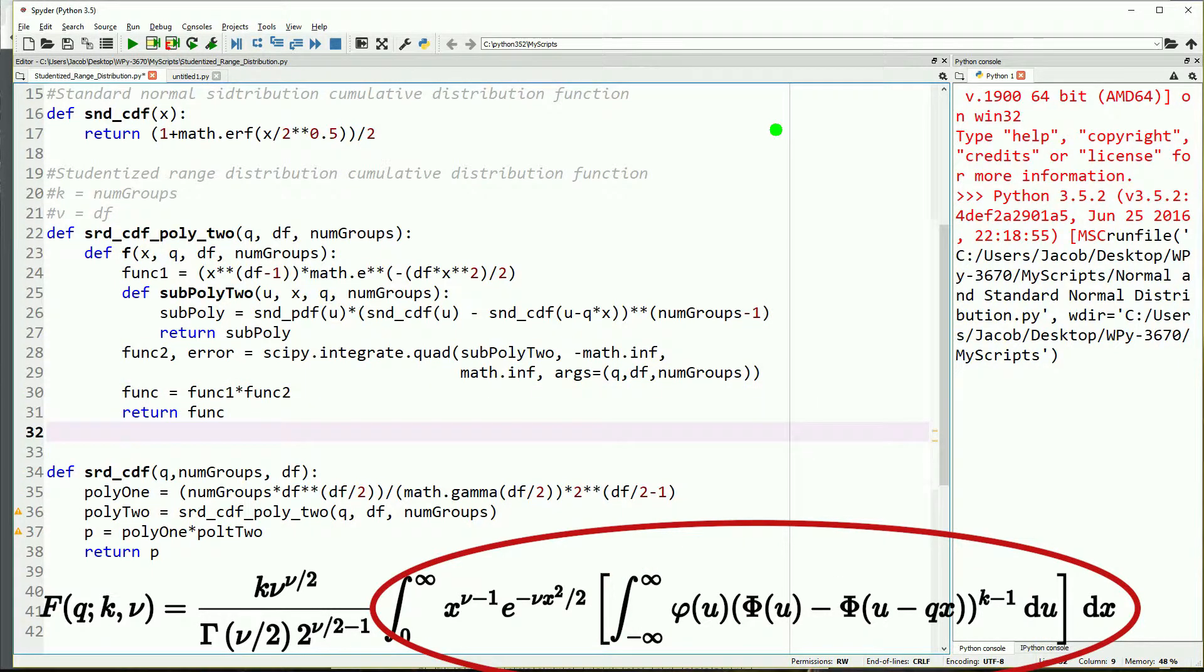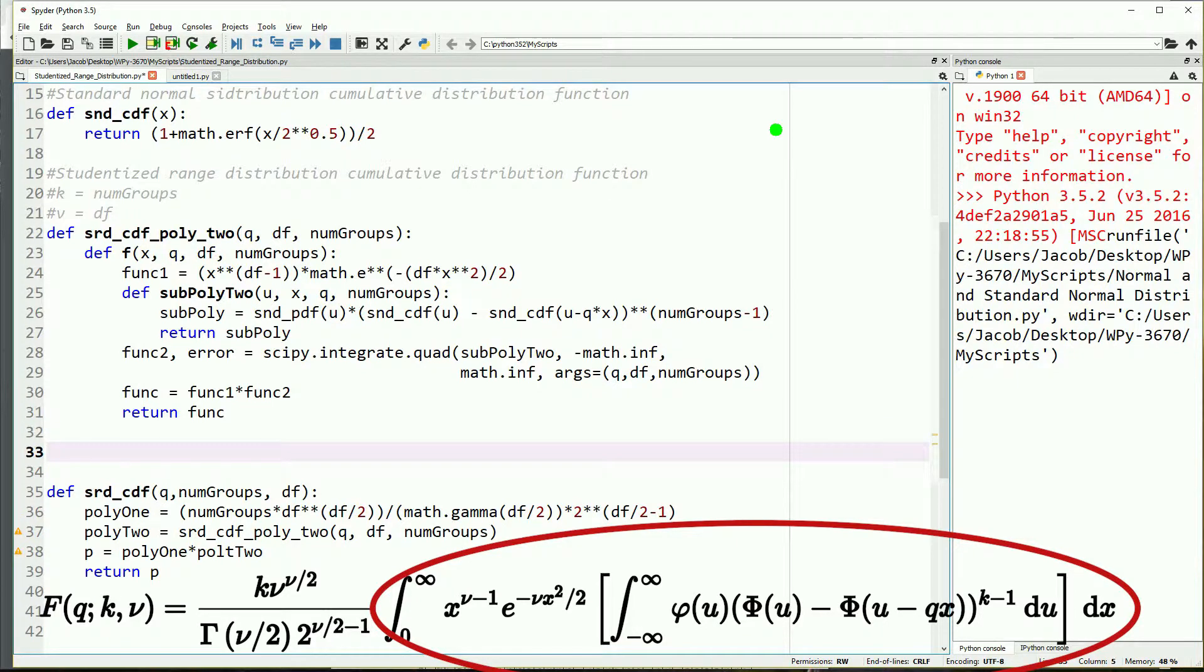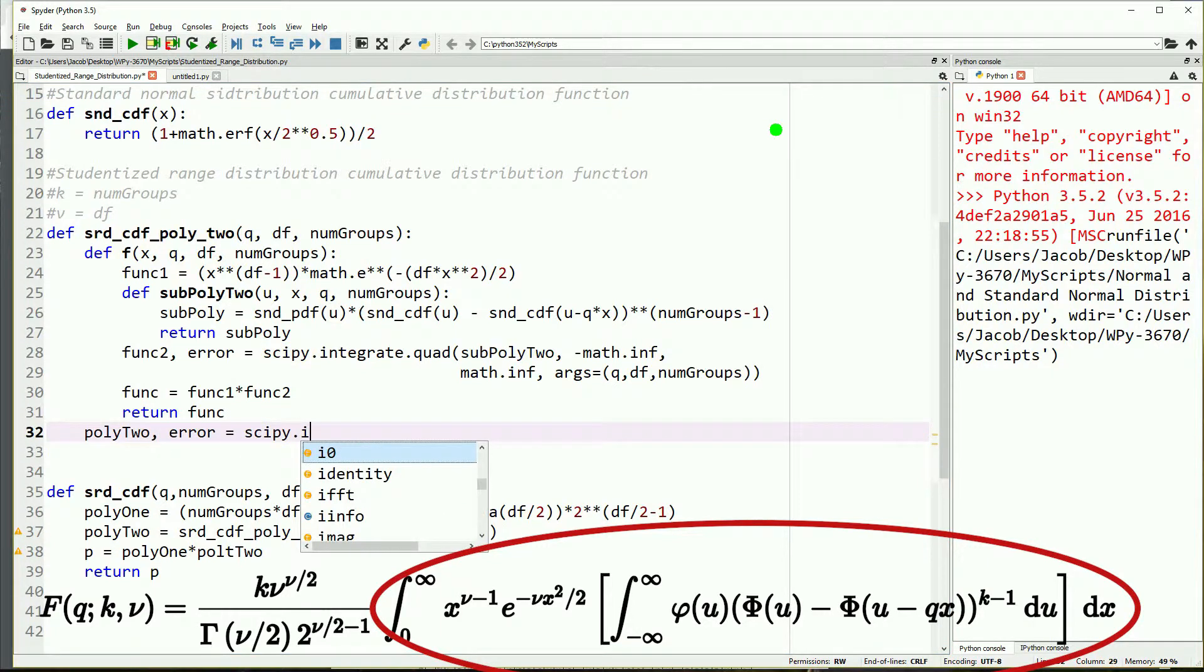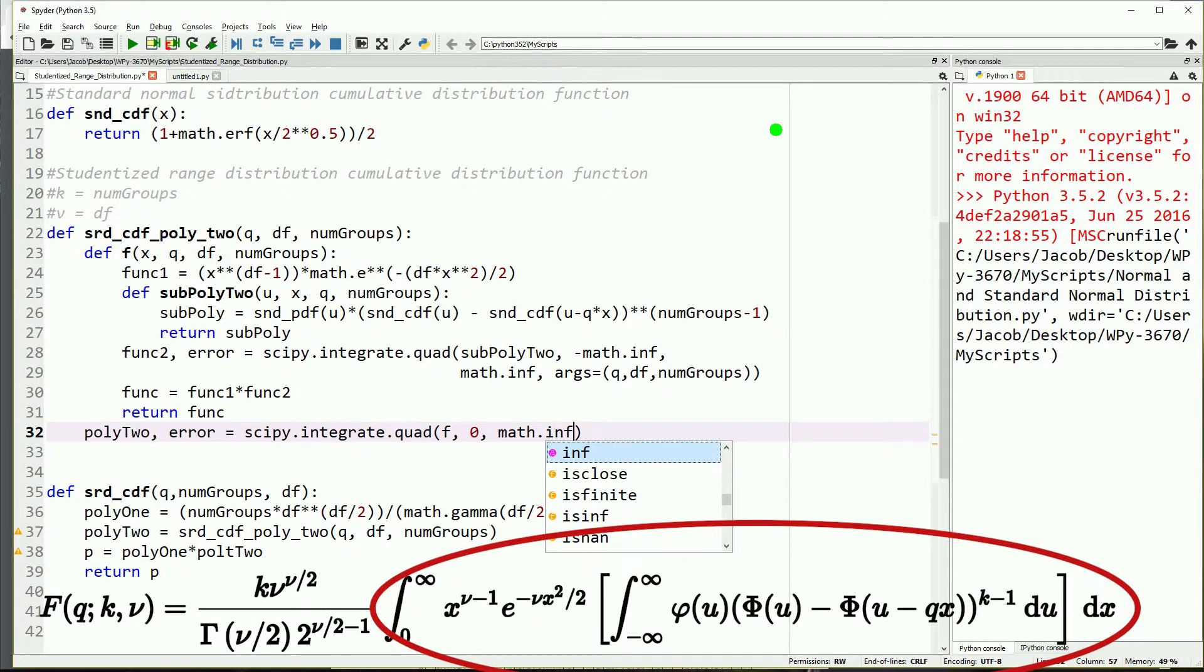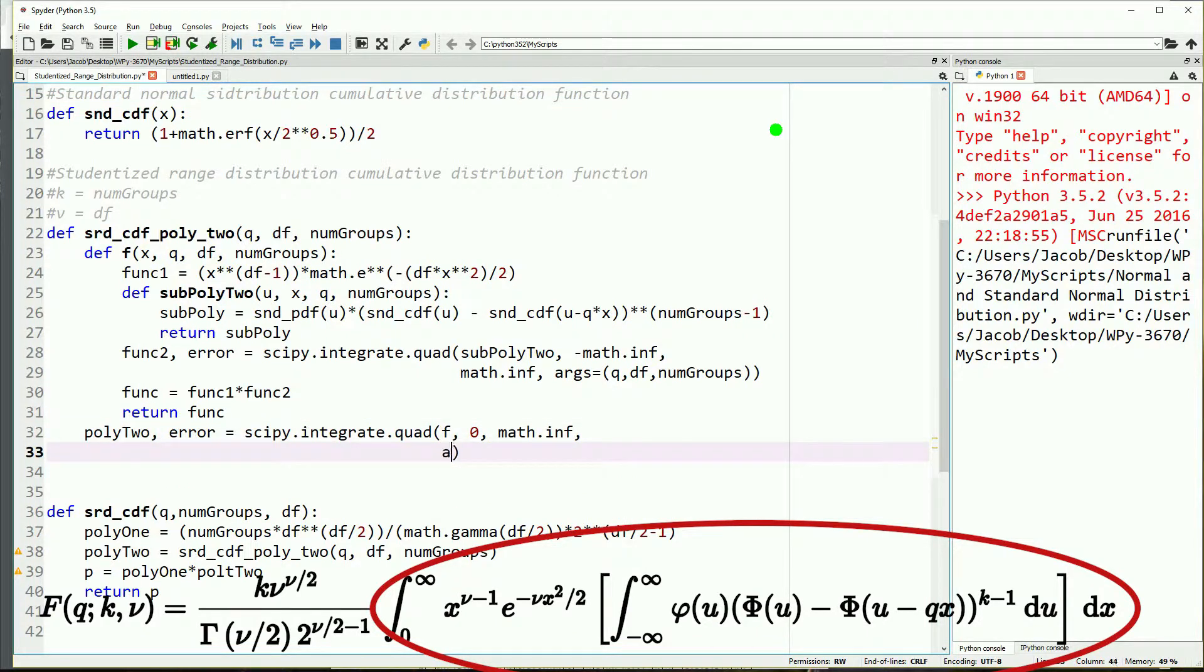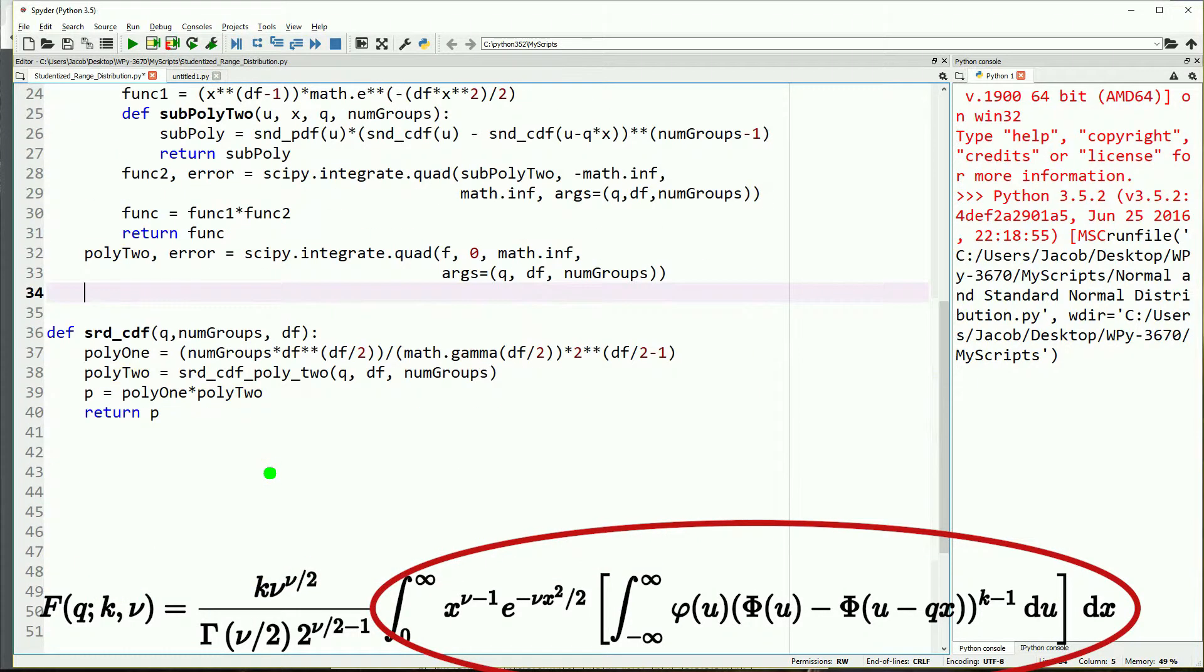Then we will take the integral of f. So we'll define poly 2 and error set equal to scipy.integrate.quad, same as before, except this time the function will be integrated with regards to f, and it will be from 0 to infinity, and it will take the additional arguments of q, df, and the number of groups. And then we'll just return poly 2. That should about do it for our function to give us the second polynomial.